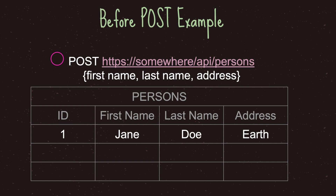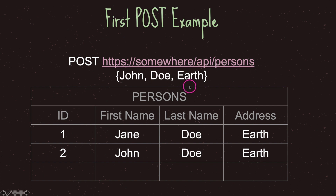Now let's look at how to create a resource. We would like to add a resource onto the persons table, so we grab the API URL and pass it information. The POST method requires that you provide all the information the table requires — in this case, a first name, last name, and address. This is the correct implementation for a POST method. So we provide the information John, Doe, and Earth, and as you can see, this information is applied directly into our persons table.